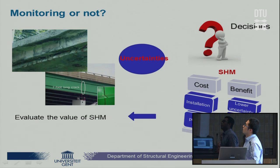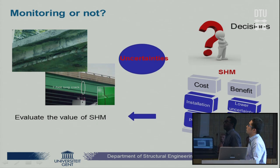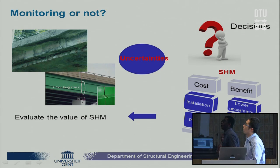The first objective is to determine whether to monitor or not, because civil engineering structures are subjected to time-dependent degrading processes which require considerations of a wide range of uncertainties. When it is required to make decisions under these uncertainties, acquiring more information prior to making the decision is usually crucial. SHM can provide information to reduce the uncertainty, so it is widely used. But it comes at a cost that is not always justified by its benefits, so we need to evaluate the value of SHM before its implementation.